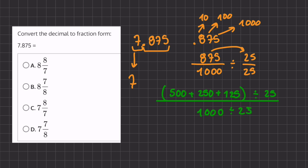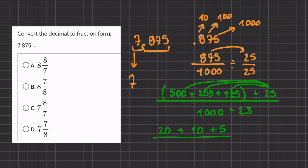This method is called the distributive property because we're able to take this 25 and divide each number in the parentheses. So let's begin. 500 divided by 25 gives us 20. 250 divided by 25 gives us 10. And 125 divided by 25 gives us 5. This will be our numerator, and our denominator will be 1,000 divided by 25, which gives us 40.